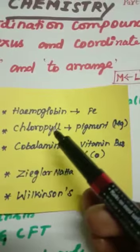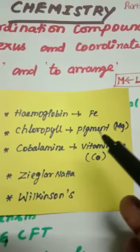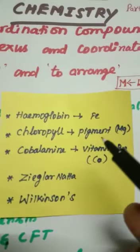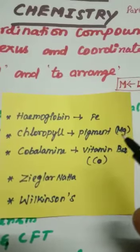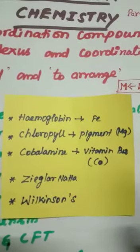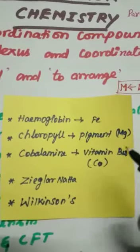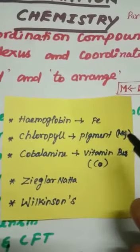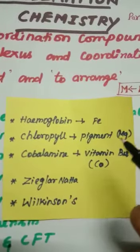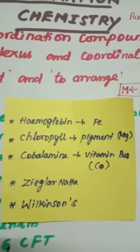Chlorophyll, which is present in leaves and acts as a very good photosensitizer in the photosynthesis process. Here, magnesium is present as a central metal atom and this is also a complex.